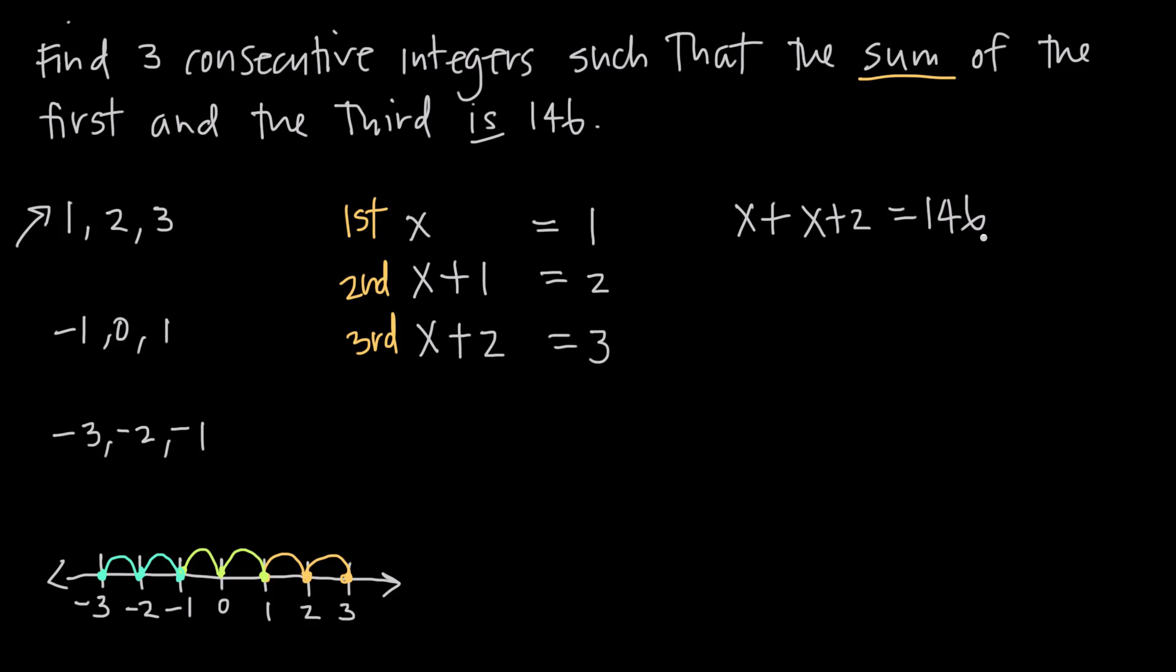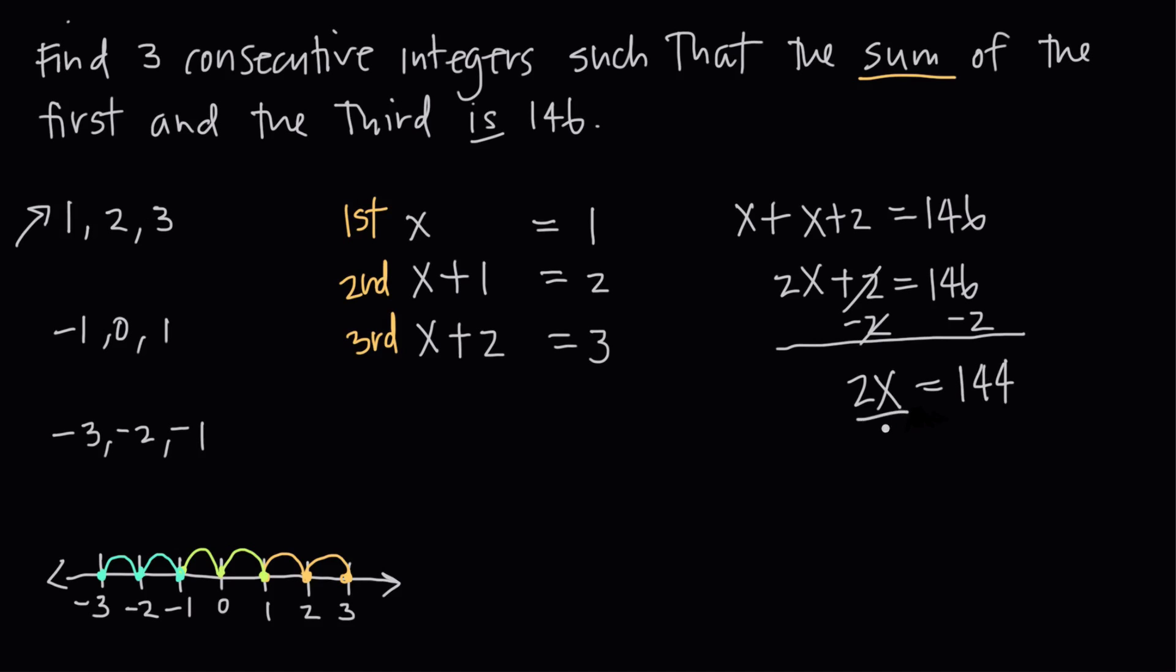Now we just need to solve this equation for x. So x plus x is 2x, plus 2 equals 146. If we subtract 2 from both sides, we get 2x plus 0 is still 2x. And 146 minus 2 on the right hand side gives us 144. Dividing both sides by 2, we get the 2s to cancel over here, leaving us with just x equals 72.